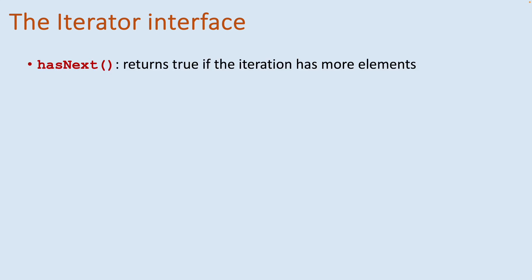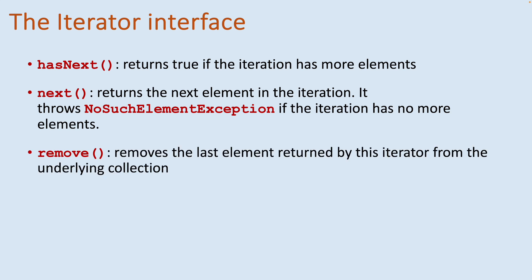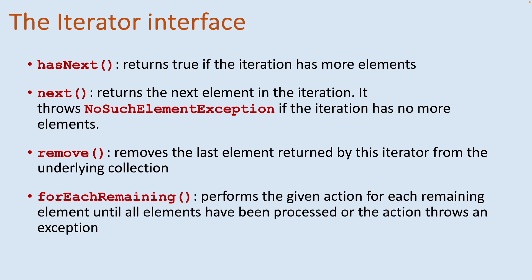The iterator interface in the Java collections framework defines four methods: forEachRemaining, hasNext, next, and remove. The hasNext method returns true if the iteration has more elements. The next method returns the next element in the iteration; it throws NoSuchElementException if the iteration has no more elements. The remove method removes the last element returned by this iterator from the underlying collection. The forEachRemaining method performs the given action for each remaining element until all elements have been processed or the action throws an exception.